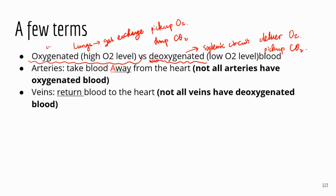From now on, I'm going to refer to oxygenated blood as the 'good blood' — not because deoxygenated blood is bad, but it's just a shorter, easier term to remember. And I'm going to refer to deoxygenated blood as the 'bad blood.' Now the next set of terms: arteries and veins. Arteries take blood away from the heart — you can remember this because the 'a' in arteries also stands for 'away.' Veins return blood to the heart.